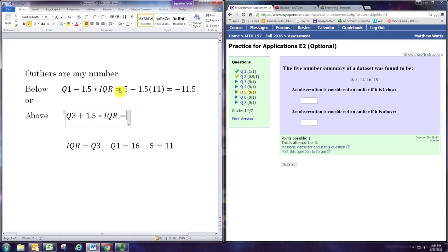By starting with the third quartile, which is 16, and adding 1.5 times the interquartile range. And we already know 1.5 times 11 is 16.5. So this tells us that the outliers also include any number greater than 32.5.